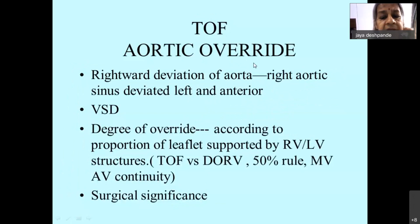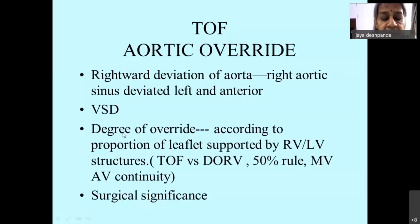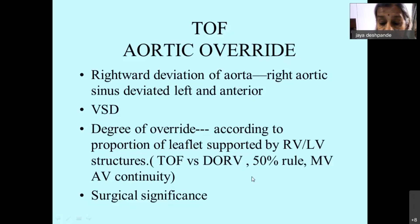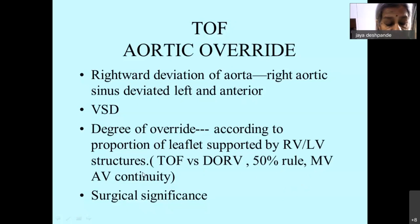The aortic override is also caused to some extent by the rightward deviation of the aorta — during development the aorta moves a little right and anterior, deviating the sinuses, giving aortic override along with the malalignment VSD. The degree of override is decided by the proportion of leaflets supported by the RV and LV. There is some controversy — many believe that if there is more than 50 percent override you would call it DORV with a sub-aortic VSD. As morphologists, we look for mitral-aortic valve continuity in Fallot's and discontinuity in DORV; however, the degree of override is of surgical significance.